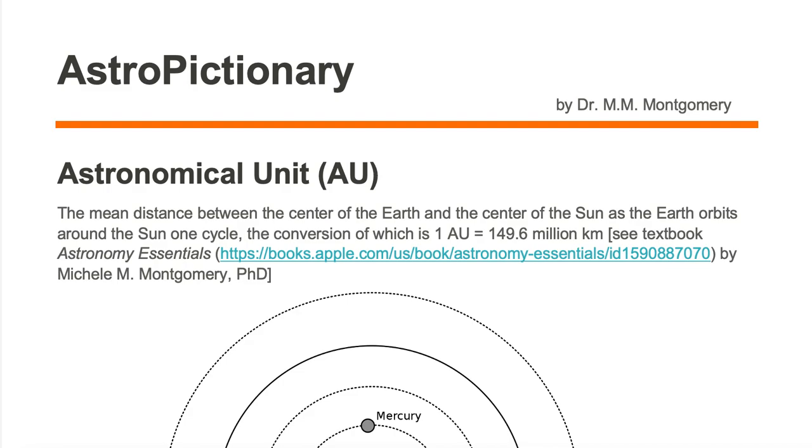An astronomical unit, or AU for short, is the mean distance between the center of the Earth and the center of the Sun as the Earth orbits around the Sun one cycle, the conversion of which is 1 AU is equal to 149.6 million kilometers.